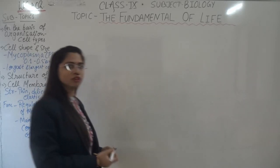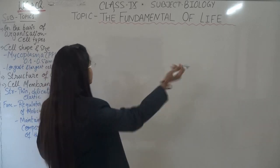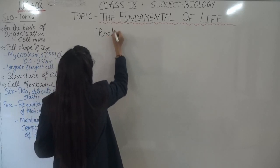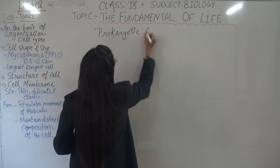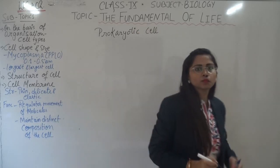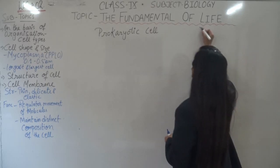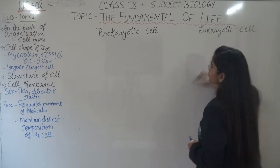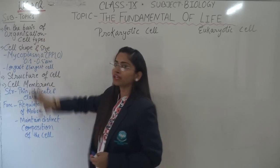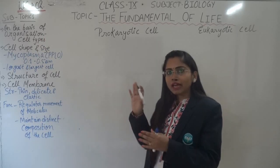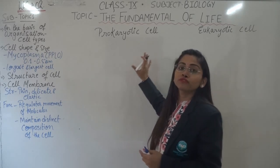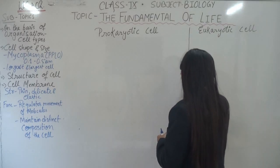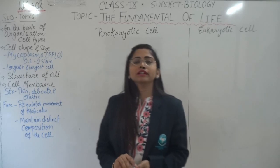Coming to the organization of a cell — when we talk about the organization of a cell, how the cell is, there are two different types of cells: prokaryotic cells and eukaryotic cells. This is our first subtopic — on the basis of organization, how the cell is organized. On that basis the cells are of two different types: prokaryotic cells and eukaryotic cells. I will be telling you about both types of cells.